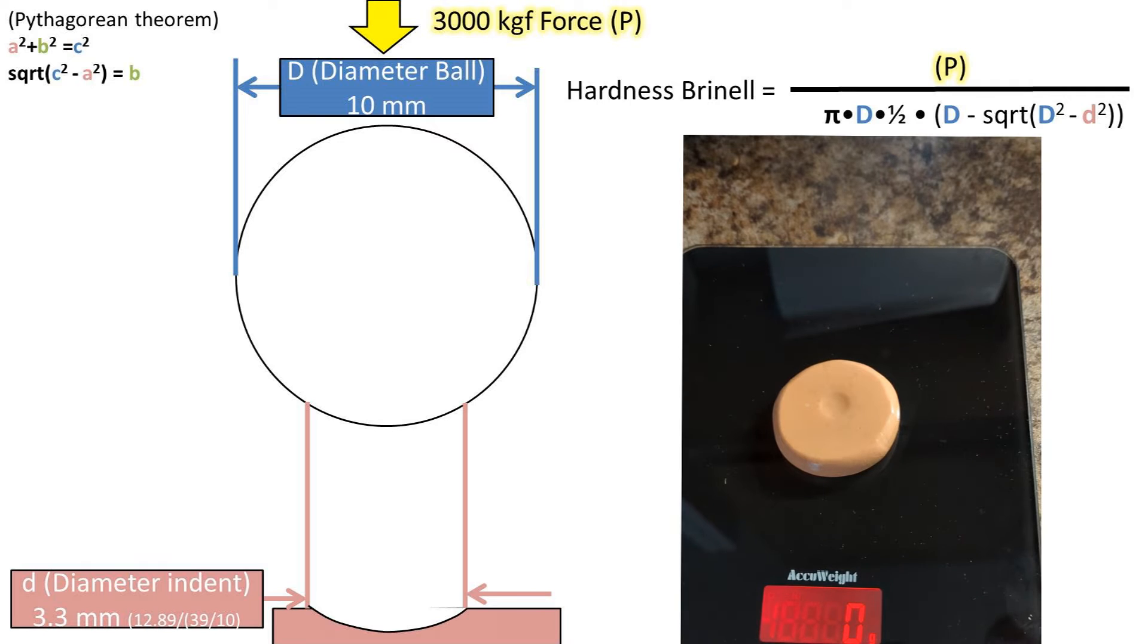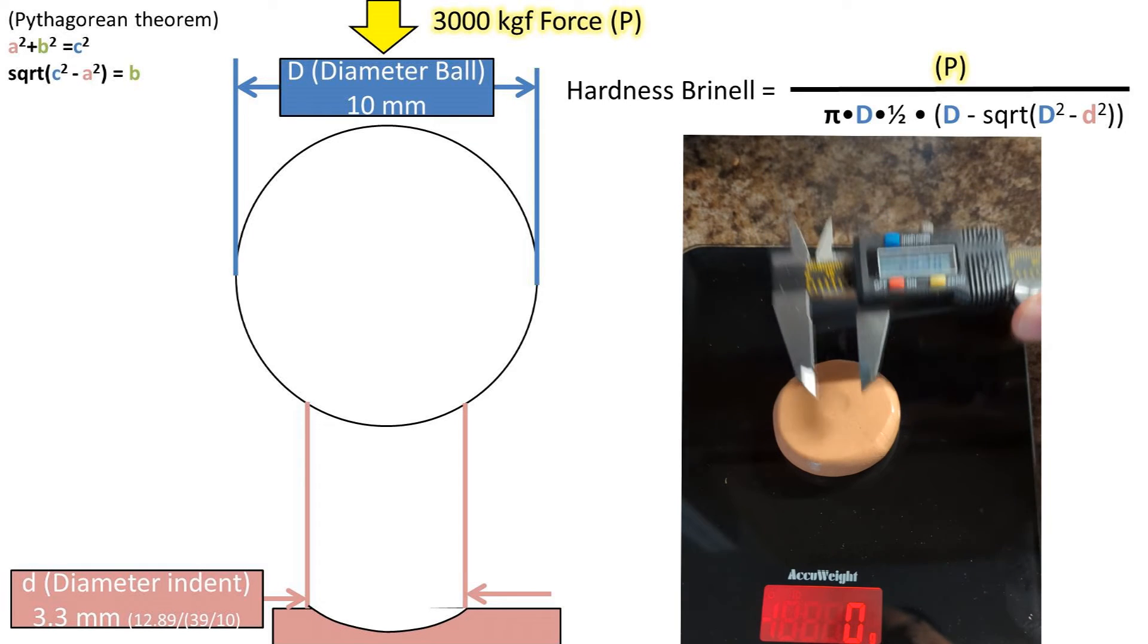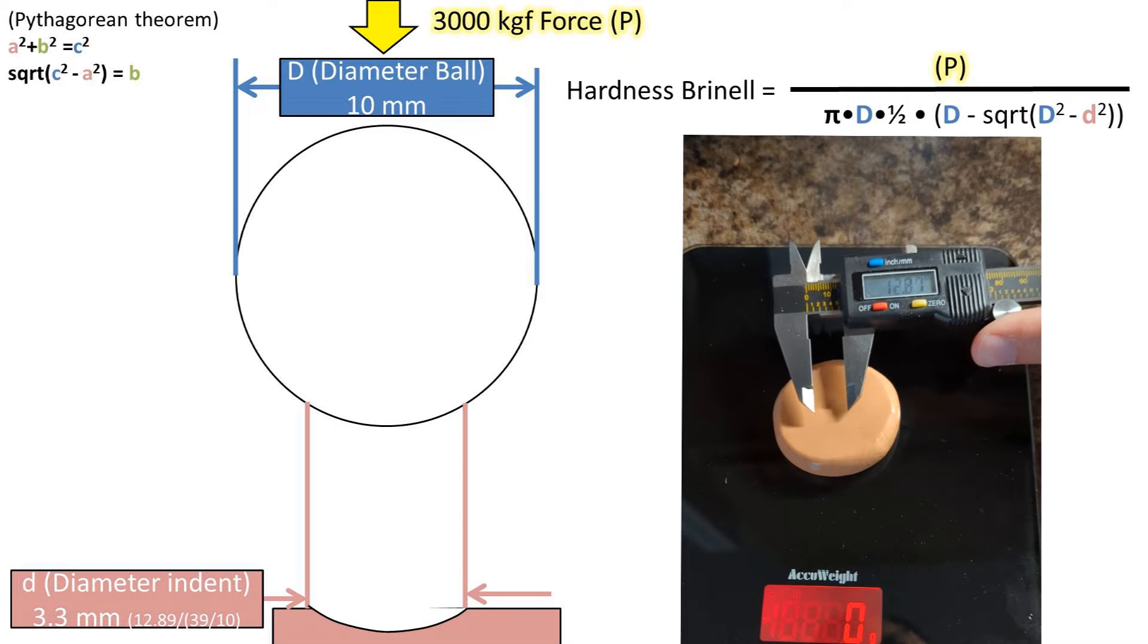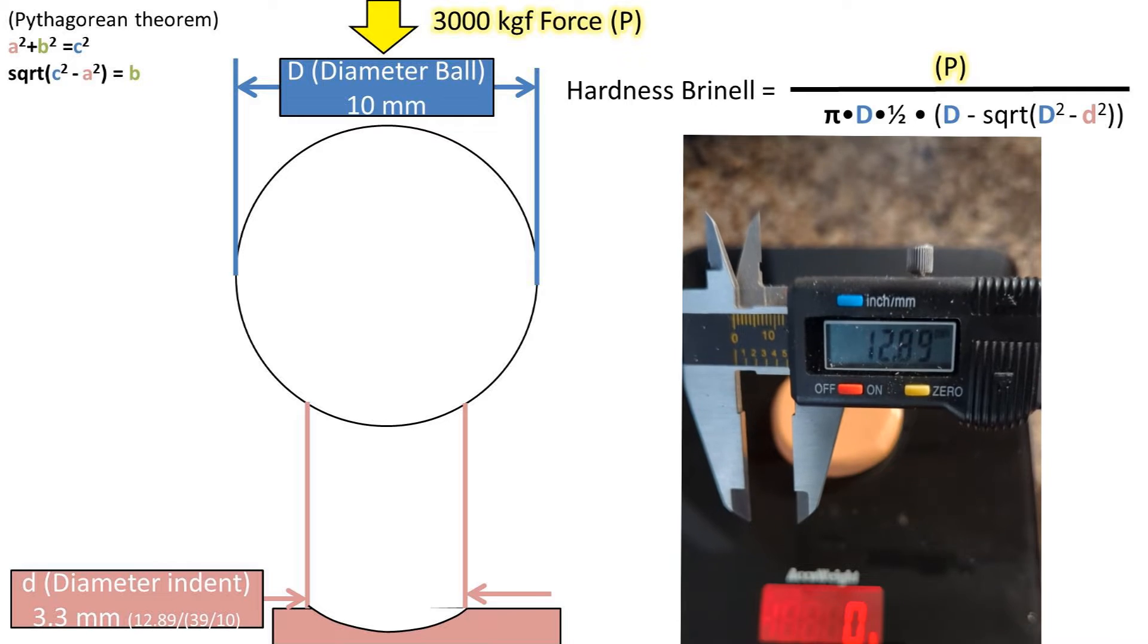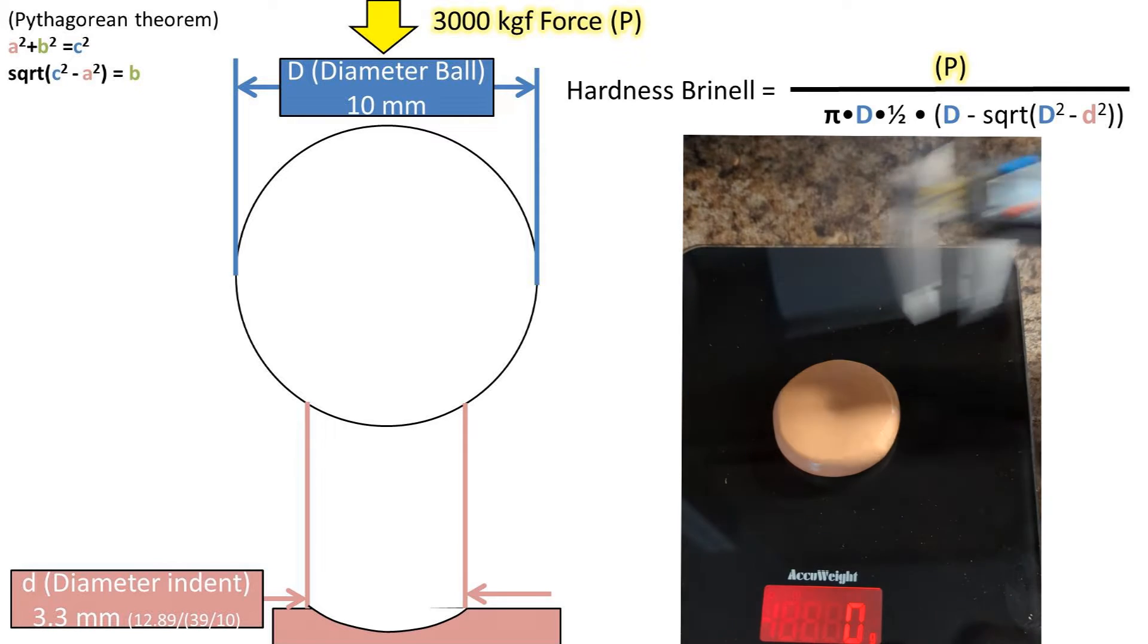We take a measurement of the diameter of the indent which is scaled down by dividing the indent diameter by 39 millimeters over 10 millimeters. We get 3.3 millimeter diameter for the indent.